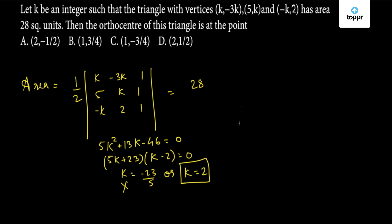The vertices that we get are (2, -6), (5, 2), and (-2, 2). Now we have to find the orthocenter for this triangle with these three vertices.